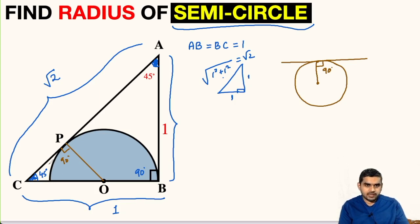Now let us look at this triangle PCO. So in triangle PCO, one angle is 90, other one is 45, so this remaining angle will also be 45 degrees.